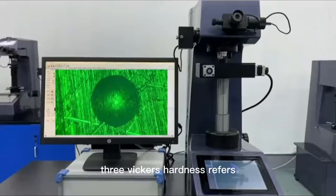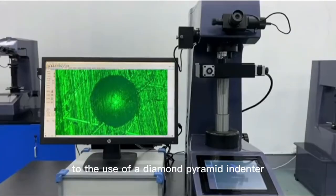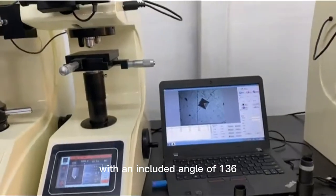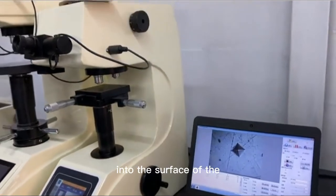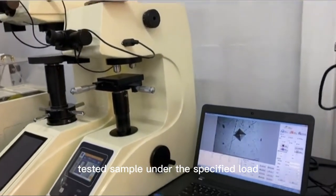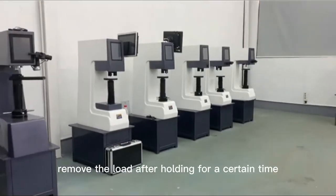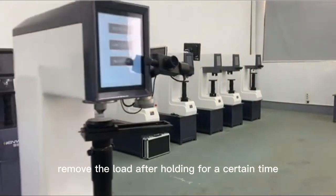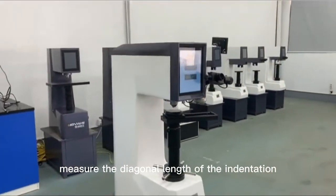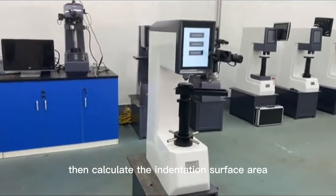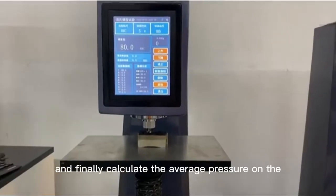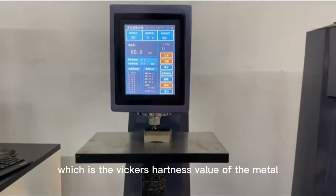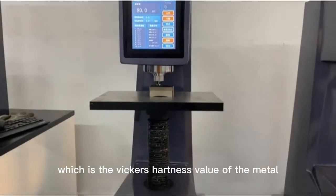Third, Vickers hardness refers to the use of a diamond pyramid indenter with an included angle of 136 degrees between the opposite phases to press into the surface of the tested sample under the specified load. Remove the load after holding for a certain time, measure the diagonal length of the indentation, then calculate the indentation surface area, and finally calculate the average pressure on the indentation surface area, which is the Vickers hardness value of the metal.